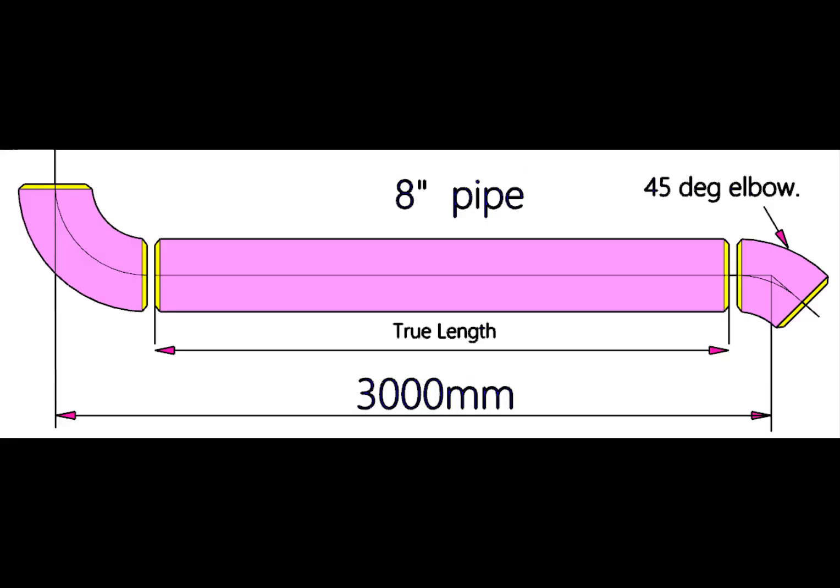Let us try another example. This piping have an 8 inch 90 degree long radius elbow and 45 degree elbow. To calculate the take off of 45 degree elbow, multiply the diameter in inches with 0.4142.